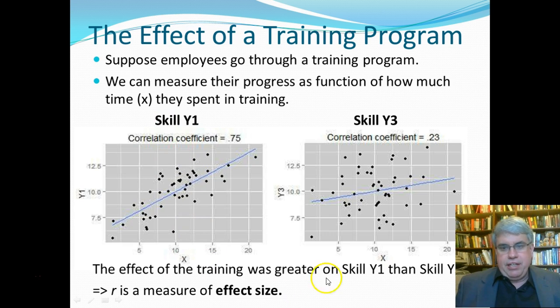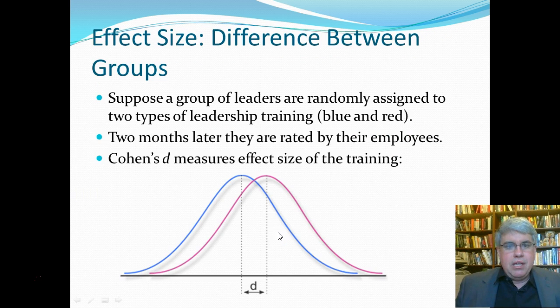So we can say that the training had a bigger effect on skill Y1, the politeness, than on skill Y3, the ability to help customers with their problems. And so that's why we can say that R, the Pearson correlation coefficient, is a measure of effect size. The bigger the absolute value, the more effect that it has on people. So that's the first type of effect size that we have.